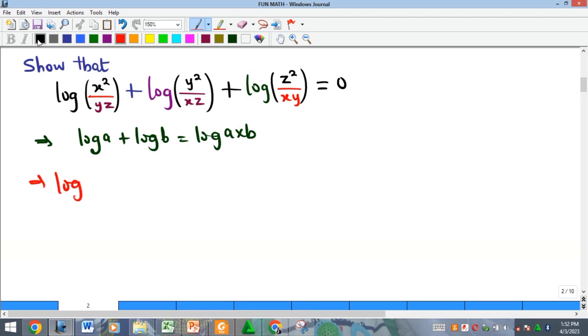We'll have the log of x squared over yz times y squared over xz multiplied by z squared over xy. So what can we do here? We will try to multiply out what we are given.